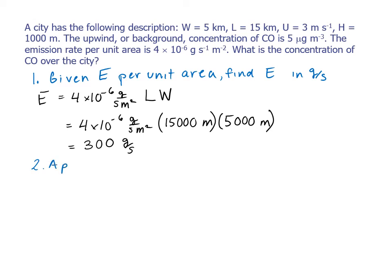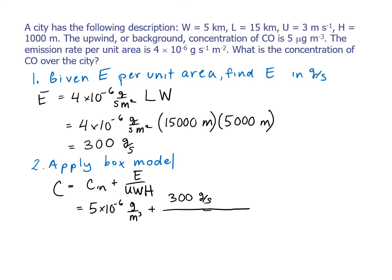Now we can apply the box model. C equals C_in plus E over UWH. C_in is our upwind background concentration, and that is 5 micrograms per cubic meter. I'm going to write that as 5 times 10 to the minus 6 grams per cubic meter plus our emission rate, which is 300 grams per second, divided by our U, which is 3 meters per second, times W, which is 5 kilometers or 5,000 meters, times H, which is 1,000 meters.